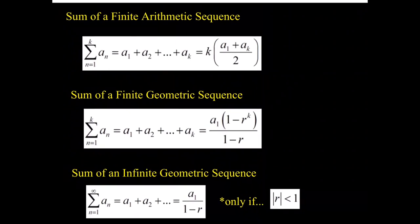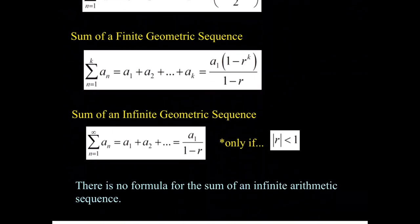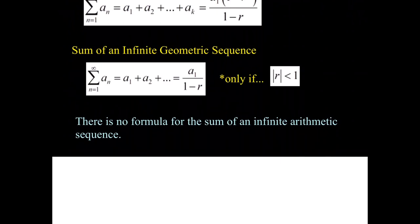I'd like to prove and derive the formulas, but we don't have time, so here they are: a formula for the sum of a finite arithmetic sequence, a formula for the sum of a finite geometric sequence, and a formula for the sum of an infinite geometric sequence. The infinite geometric formula only works if the absolute value of r is less than 1. There is no formula for the sum of an infinite arithmetic sequence — it just keeps getting bigger and bigger.